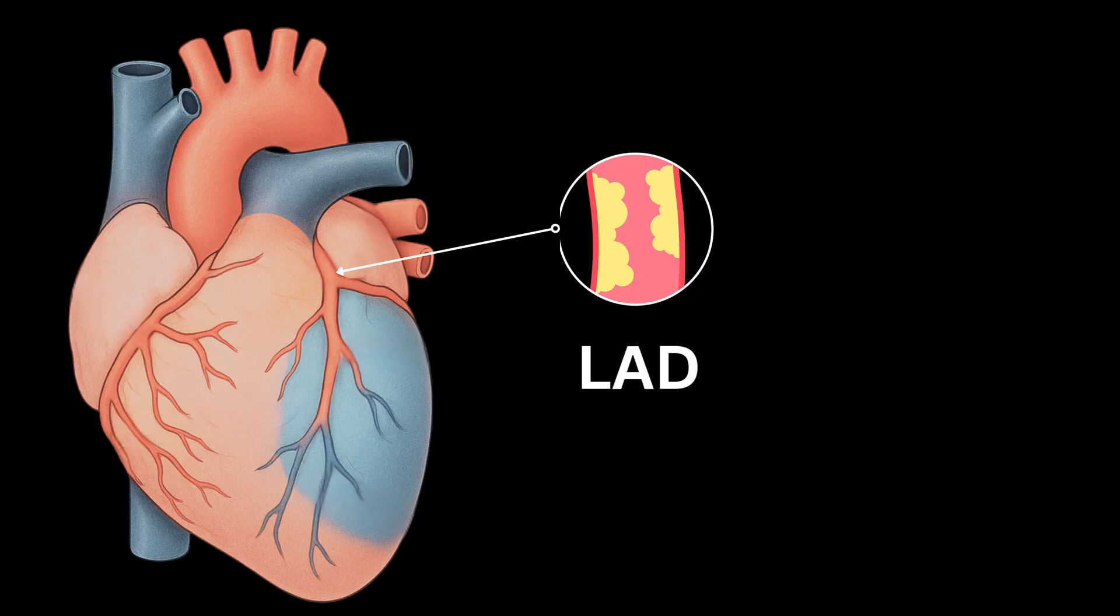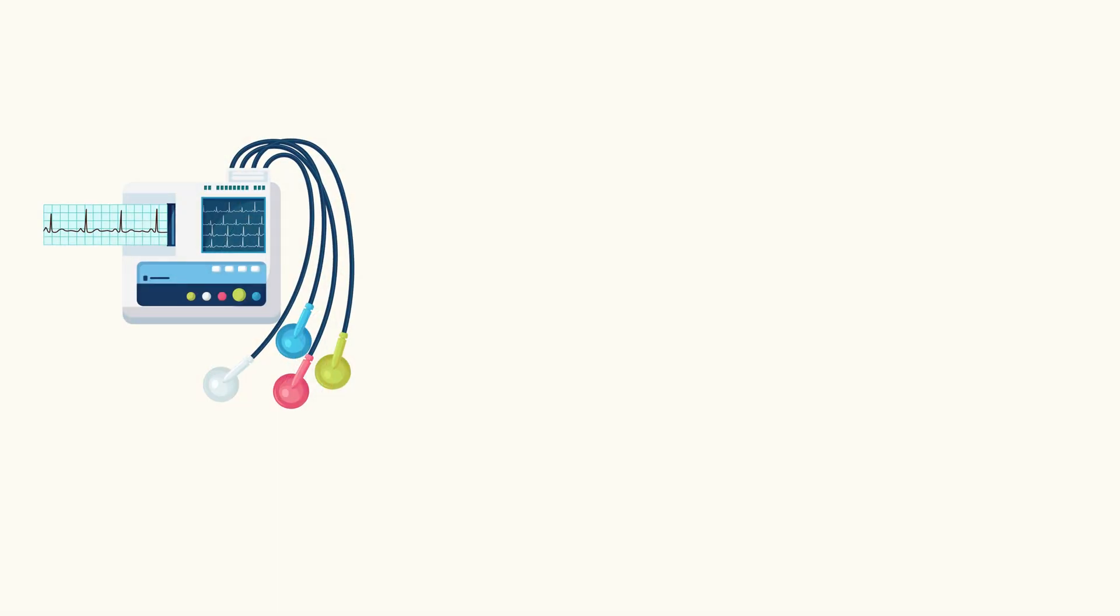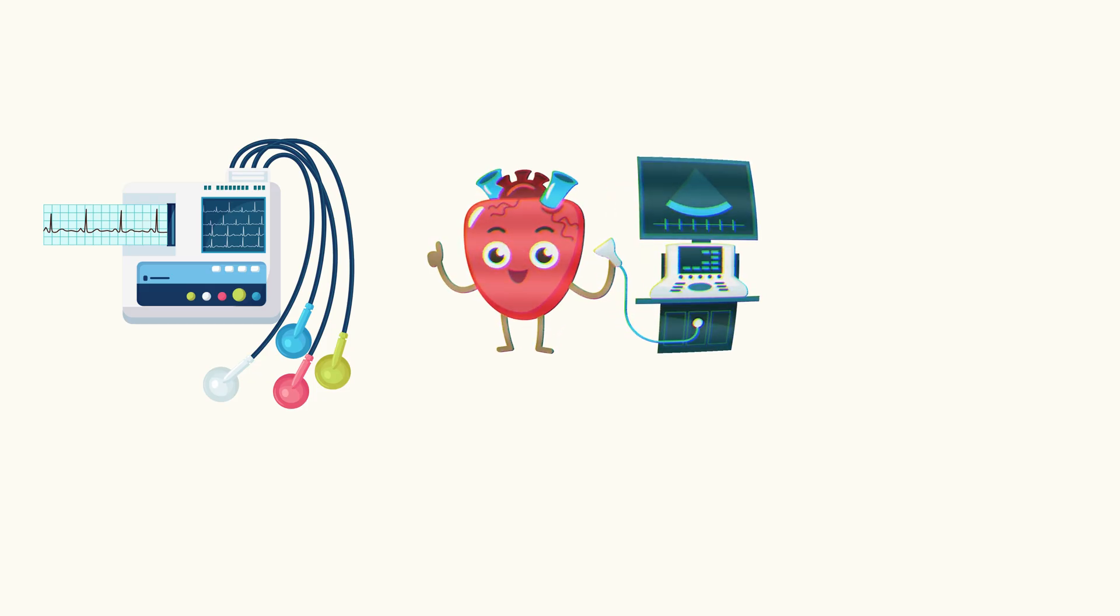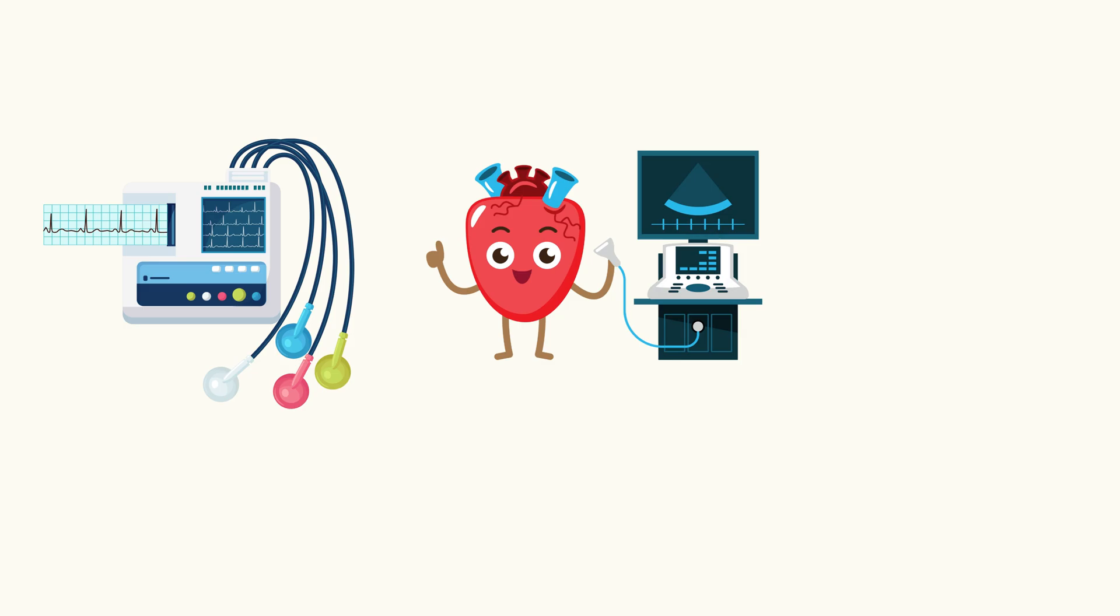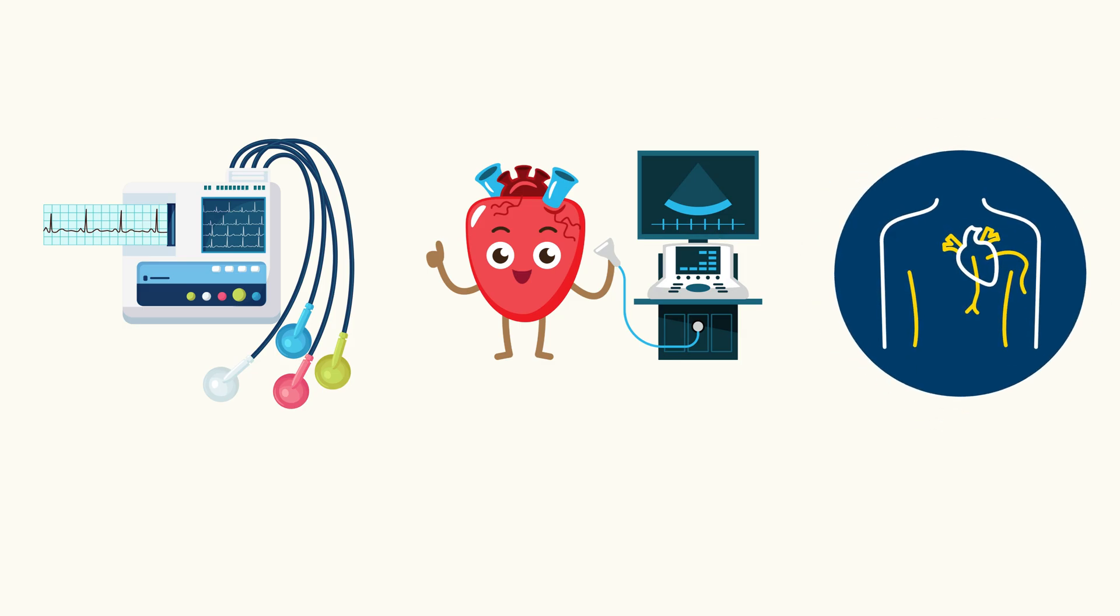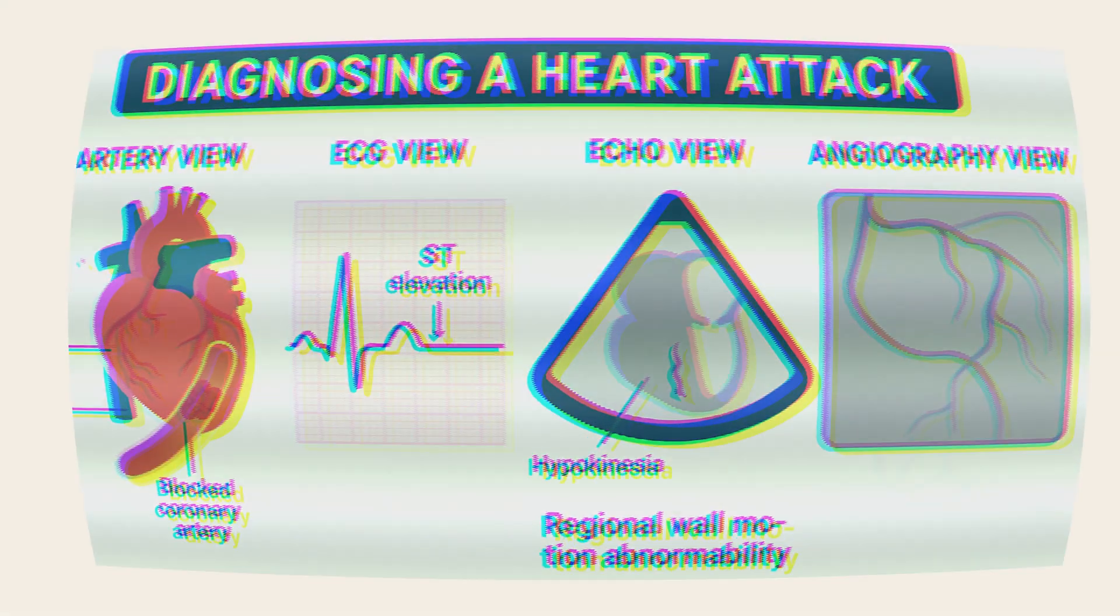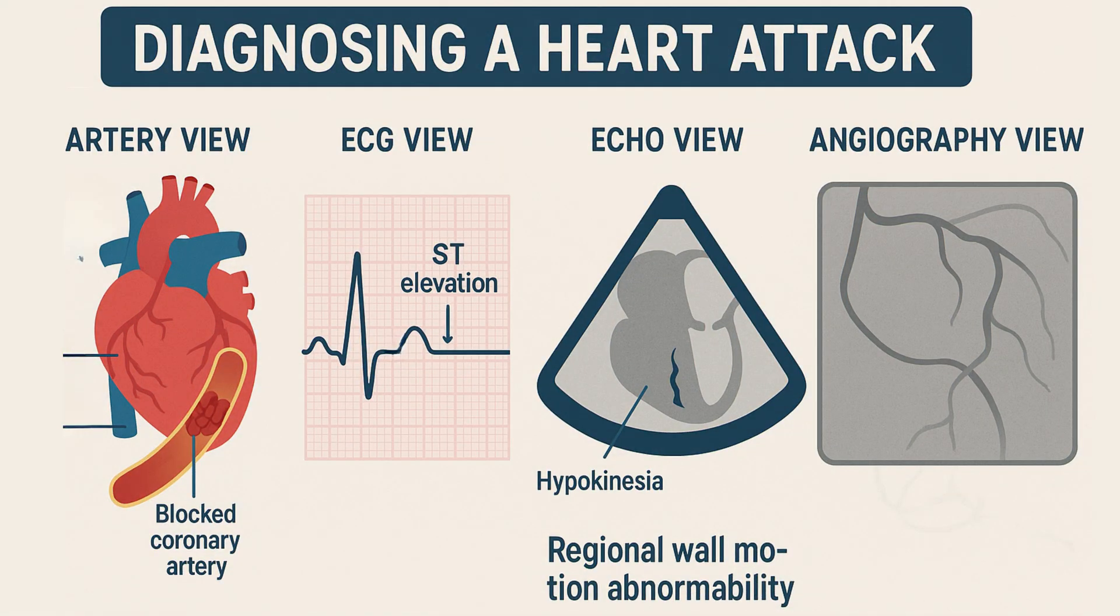Now we have three tools giving us complementary information. First, the ECG, which suggests which artery is blocked. Second, there is 2D echo, which shows which wall is affected. And third, there is angiography, which confirms the exact location of the block. Each test provides us a critical piece of the puzzle. Together, they allow for an accurate diagnosis and targeted treatment.